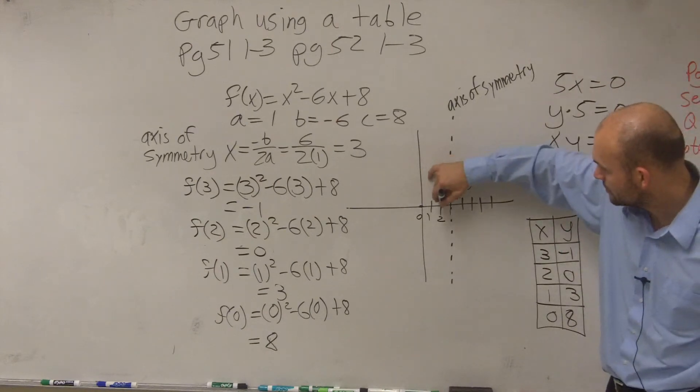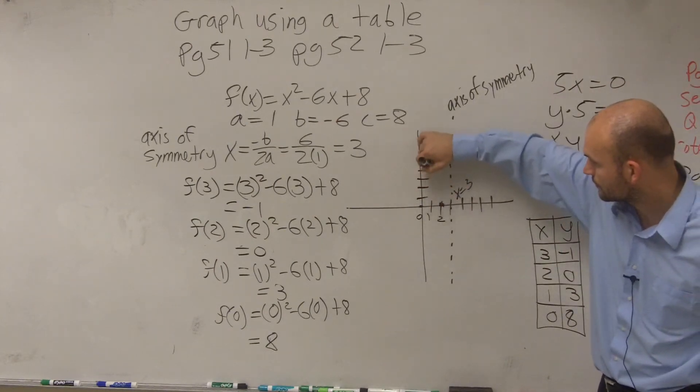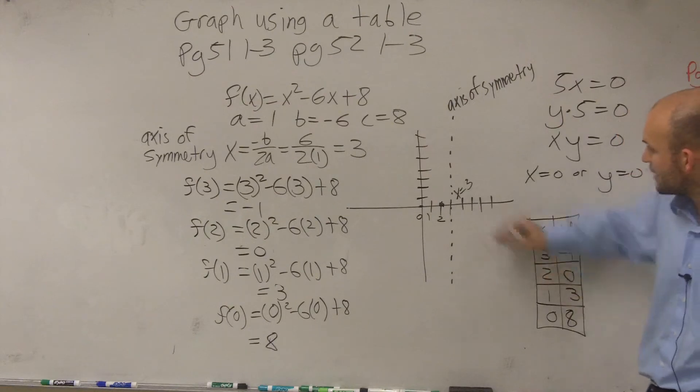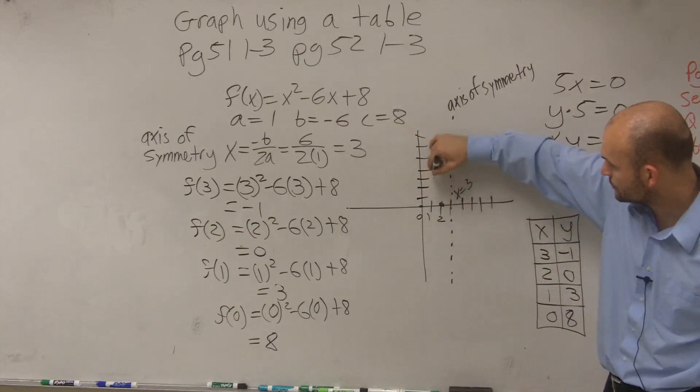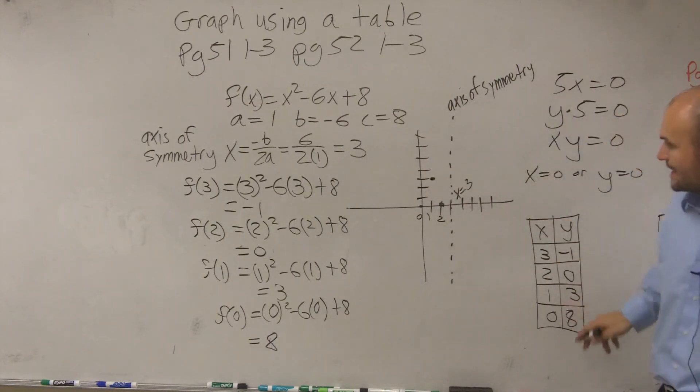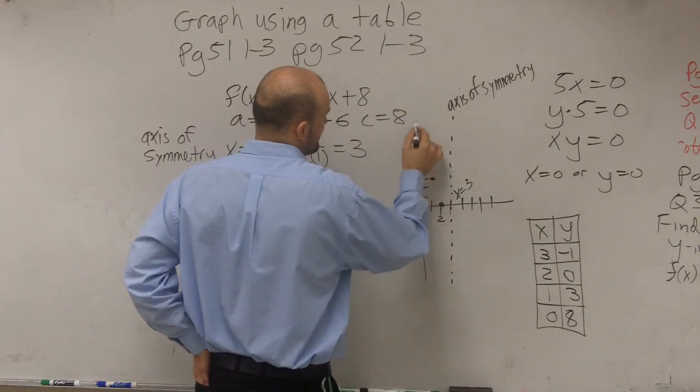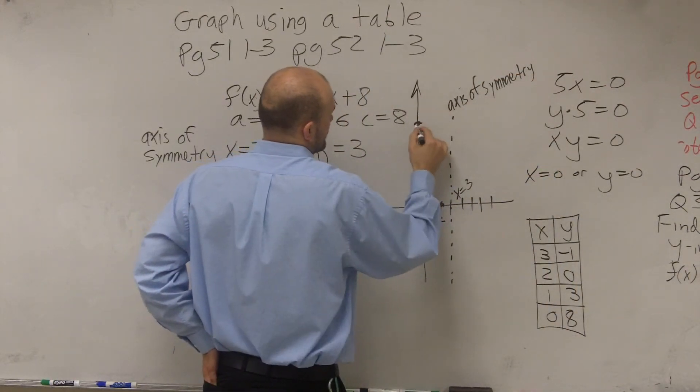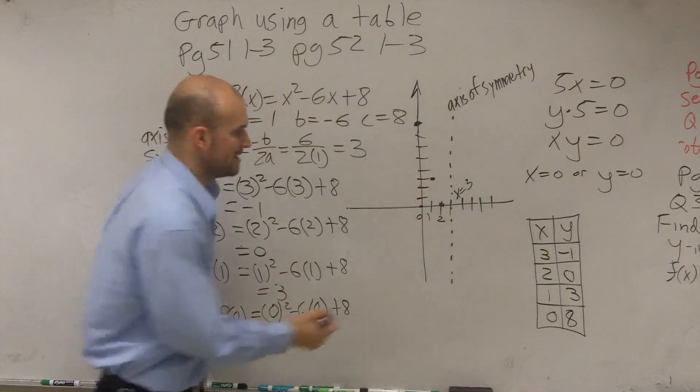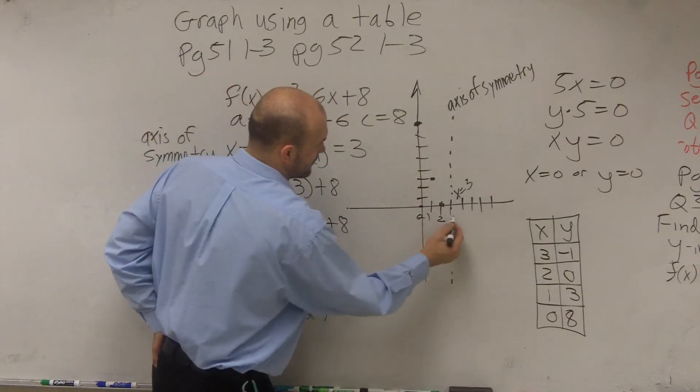So the next one is at 2 comma 0. The next point is at 1 comma 3: 1, 2, 3. And then that last point is at 0, 8: 0, 1, 2, 3, 4, 5, 6, 7, 8. And then our vertex is at 3 comma negative 1.